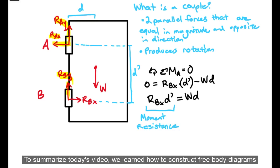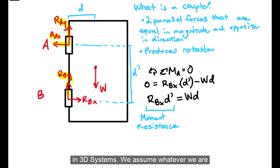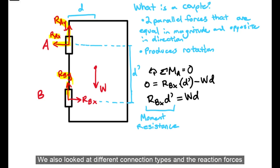To summarize today's video, we learned how to construct free body diagrams in 3D systems. We assume whatever we are analyzing is in static equilibrium, so we can apply the equations of equilibrium, which we'll be going over in the next video. We also looked at different connection types and the reaction forces produced at that connection, which we can draw on our free body diagrams when we show all the unknown reactions.